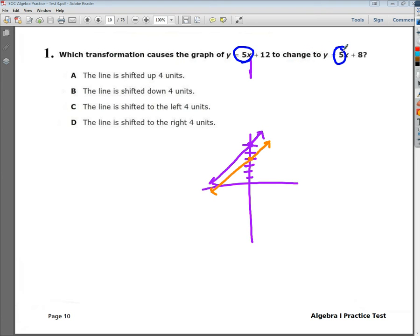In my original, I'm at 12, and in my new version, I'm down to 8. So I actually went down, that's kind of the important part. The line itself is exactly the same, I'm just shifting it down. So I'm going to say that my answer for number 1 is B.